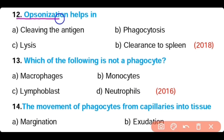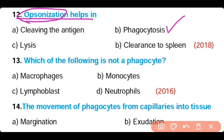Question number 12. Opsonization helps in: cleaving the antigen, phagocytosis, lysis, or clearance to the spleen. The correct answer is Option B. Opsonization, which is the identification of antigen by specific components called opsonin, helps in phagocytosis.